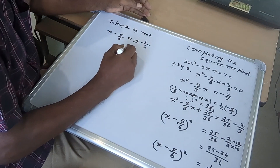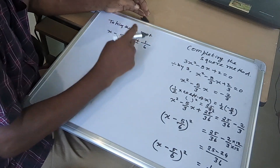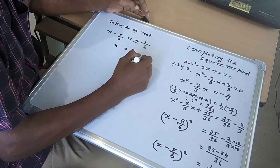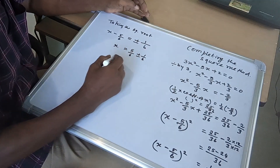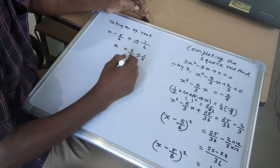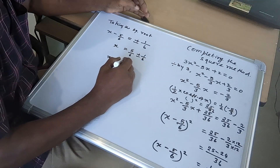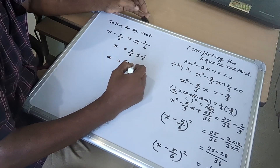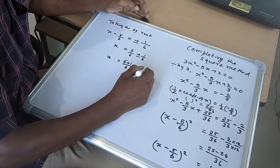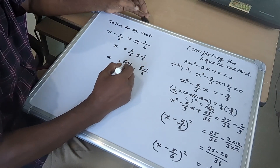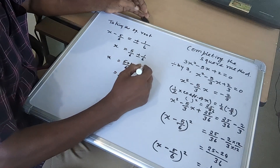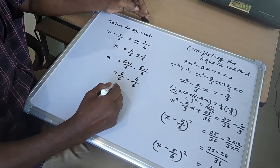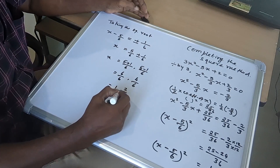So x equal to 5/6 plus or minus 1/6. This gives two values: x equal to (5 plus 1)/6 or (5 minus 1)/6. That is 6/6 or 4/6, which simplifies to 1 or 2/3.